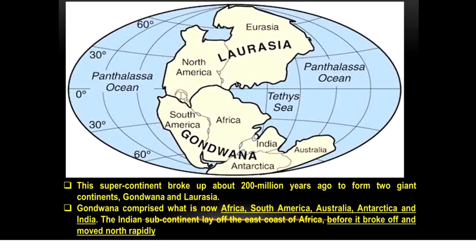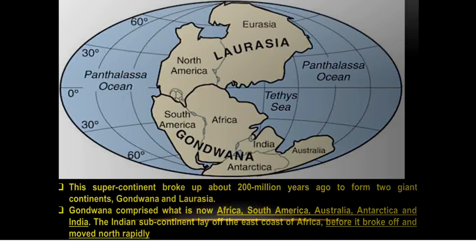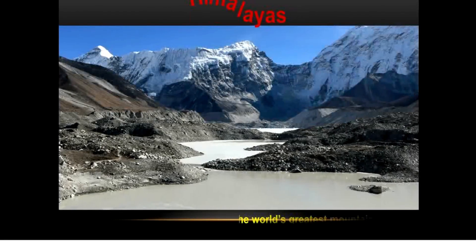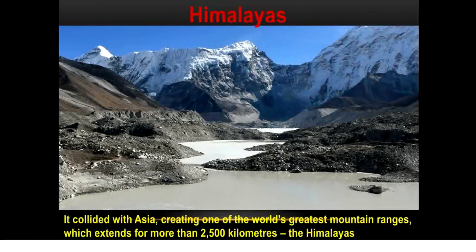The Indian subcontinent lay off the east coast of Africa, before it broke off and moved north rapidly. It collided with Asia, creating one of the world's greatest mountain ranges, which extends for more than 2,500 kilometers — the Himalayas.